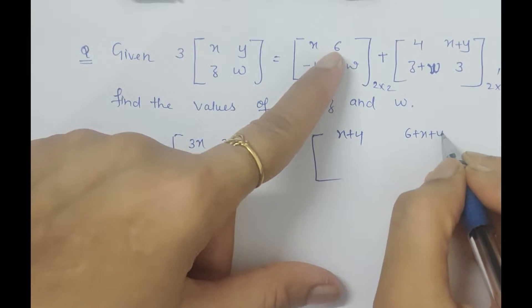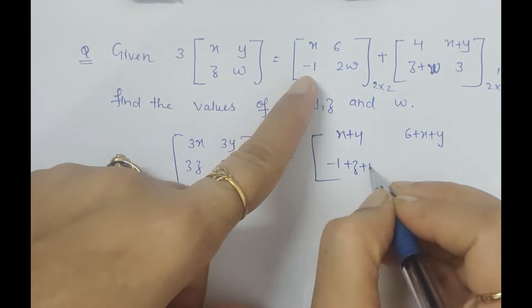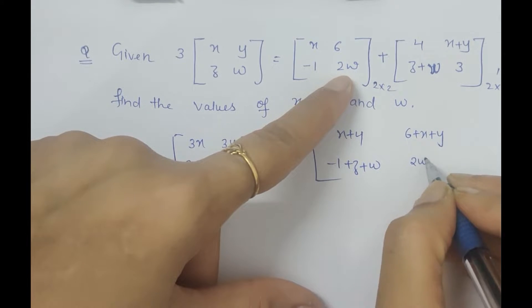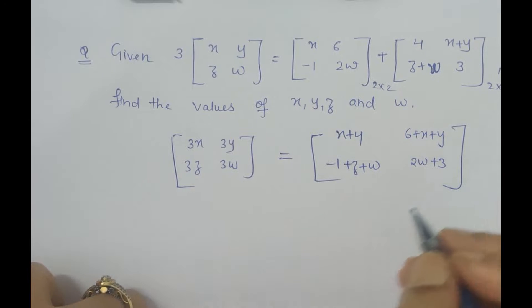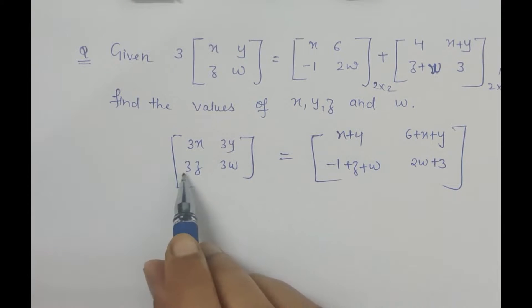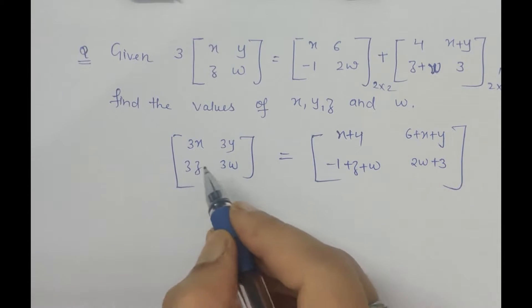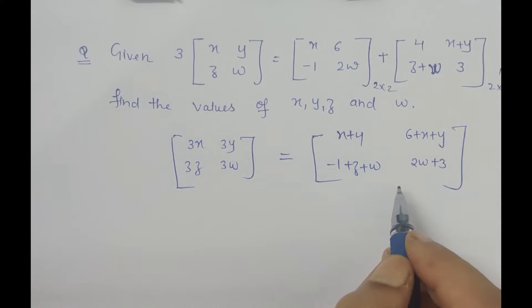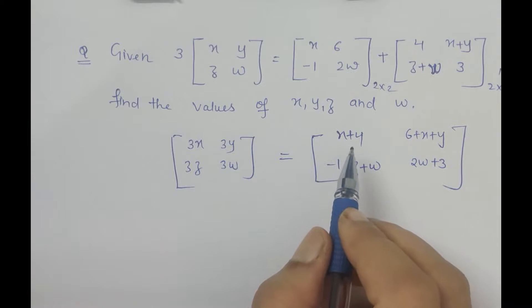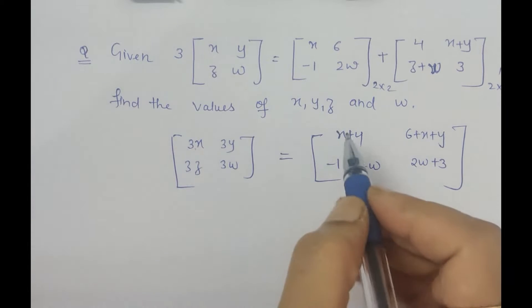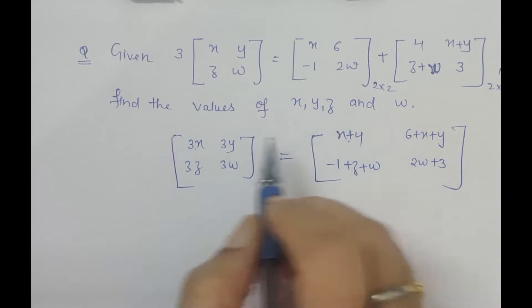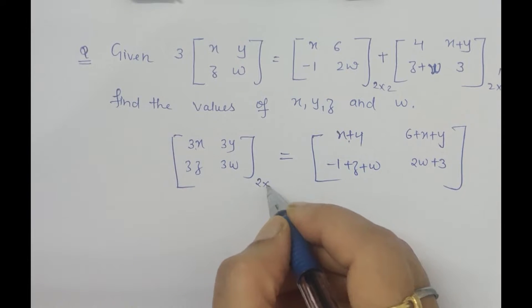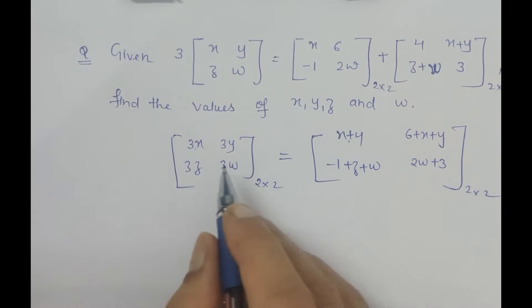In this step, it's clear that this is a matrix equal to another matrix. What does it imply? It means the corresponding elements are also equal. Corresponding elements means the elements at the same position, like first row first column. Both are 2 by 2, so we have to compare the corresponding elements to find the value of the unknowns.